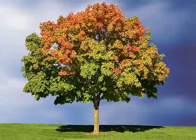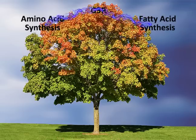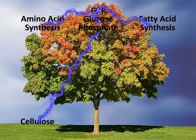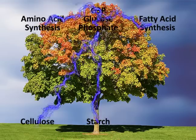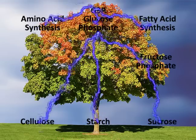Light independent reactions are necessary for plants to make G3P. This will then be used in amino acid synthesis and fatty acid synthesis. G3P will also be used to make glucose phosphate, which will then make cellulose, starch, and then added to fructose phosphate, sucrose.